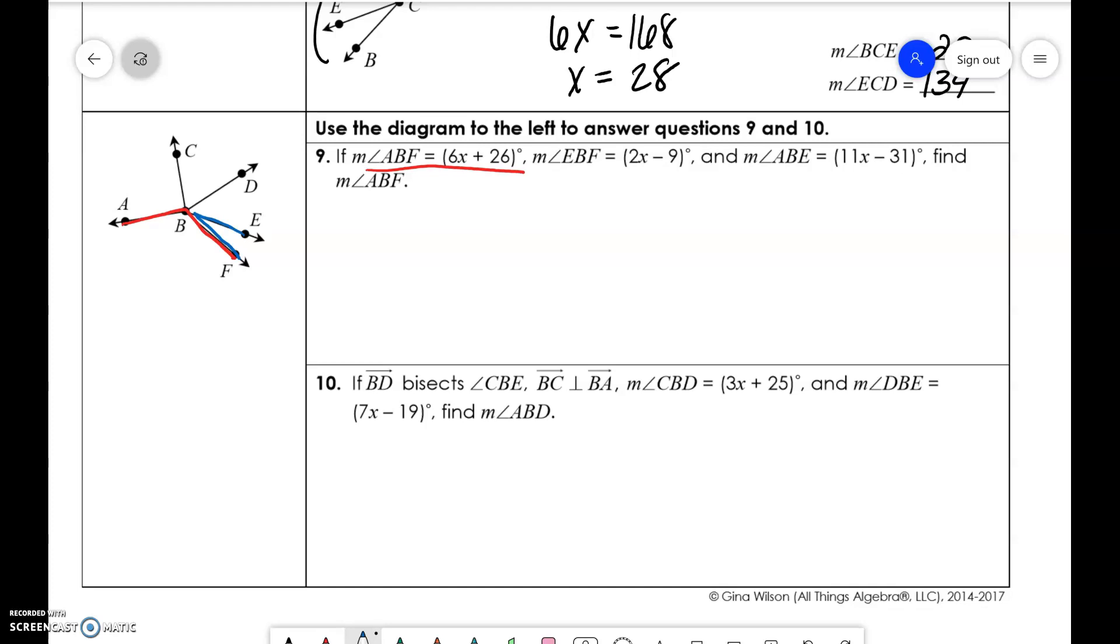EBF. EBF is here. That's the blue. And ABE is the green. Okay. So we're going to add 6x plus 26 plus 2x minus 9 is equal to 11x minus 31.